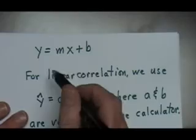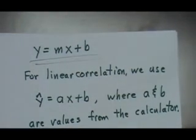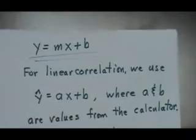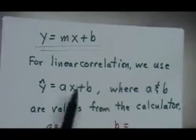The fact that there is a significant linear correlation means I should be able to do this mapping. And this mapping is a linear mapping, and that's why, in general, we use y equals mx plus b. Now, that's what you should be familiar with from algebra class, and we're going to modify this just a hair. For linear correlation, we use something very similar to that, but here's how we change it.